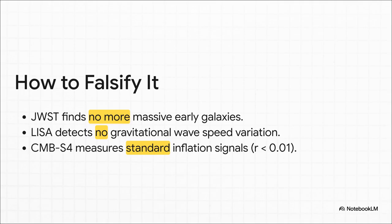The theory isn't slippery. It draws clear, hard lines in the sand. If the JWST suddenly stops finding these massive early galaxies, the theory is in deep trouble. If the future LISA mission detects no changes in the speed of ancient gravitational waves, the theory fails. It makes these bold predictions, which means it can be definitively proven wrong. That's how you know it's worth taking seriously.